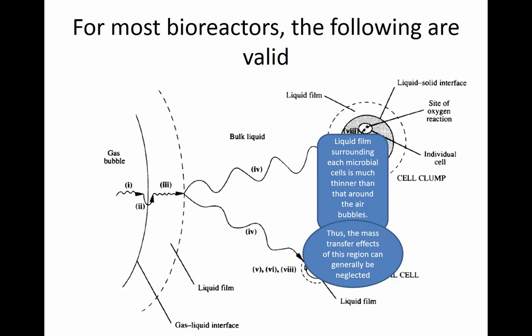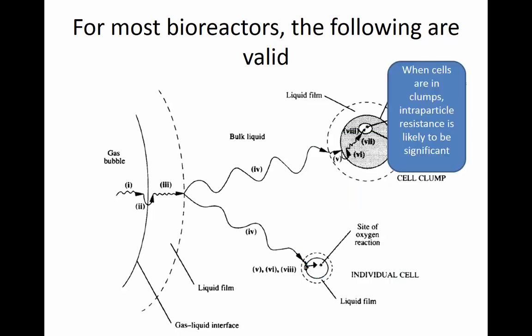Mass transfer effects in that liquid film region surrounding cells or cell clumps can generally be neglected. When cells are in clumps, we have intraparticle resistance, because oxygen attempting to reach an individual cell somewhere in the middle of a clump must traverse many other cells as well as extracellular polymeric substances. That resistance is likely to be significant — it's like diffusion through a biofilm, and those effects are significant, as we devoted a whole class to calculating diffusion through biofilms.